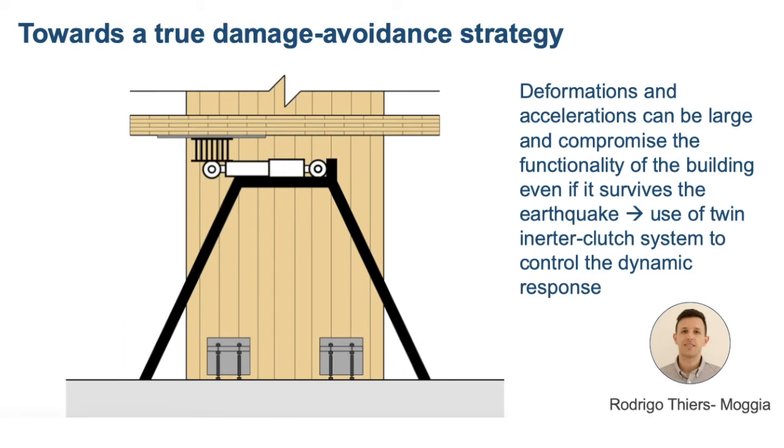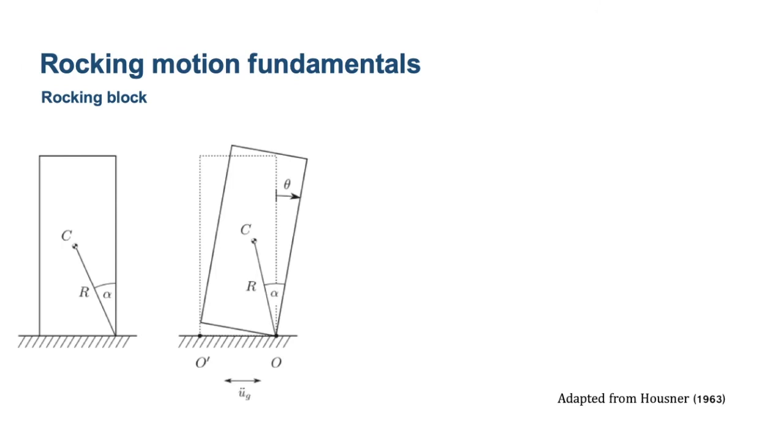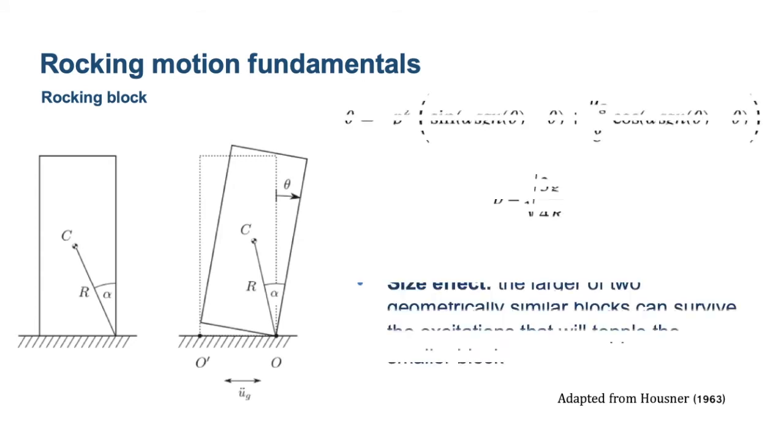With Rodrigo, we started looking at ways of implementing inerters and coupling them with rocking timber walls to try to reduce deformations and also accelerations that can be large and can otherwise compromise the functionality of the building, even in those cases where the building survives the ground motion. The problem with rocking is that it is very different from the sort of systems that we are more familiar with in structural engineering. To start with, fixed base structures, conventional structures, will normally be characterized by a period or a series of periods, the way they prefer to vibrate.